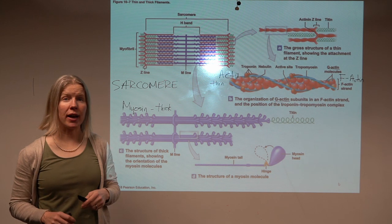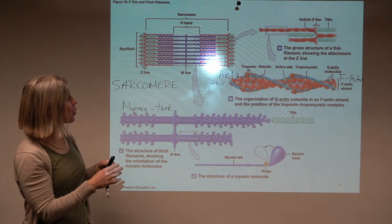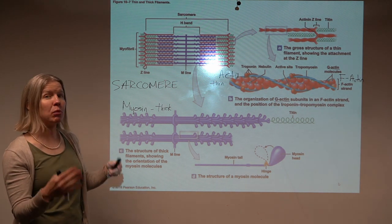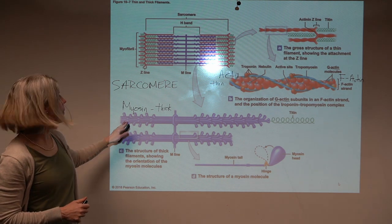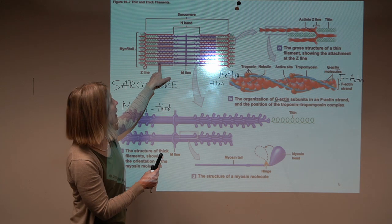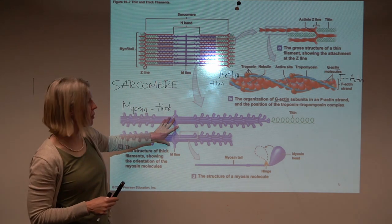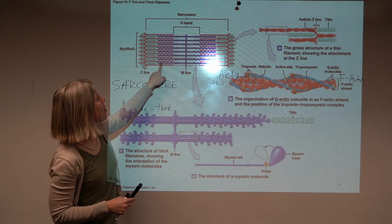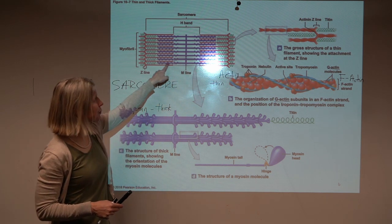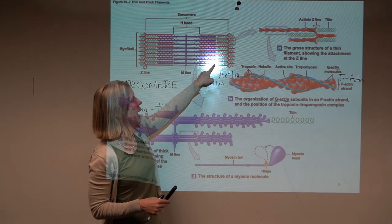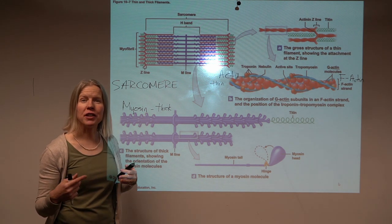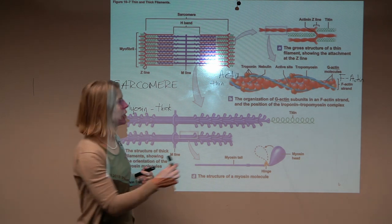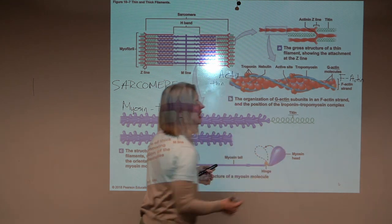You also then have, within the sarcomere, a series of stabilizing proteins. A couple examples for you here. On myosin, and again, in our sarcomere, they keep the color coding pretty good here. The myosin is here in purple, and notice that it's actually attached to those Z-lines, and that's by one of these stabilizing proteins. This one is called titin.